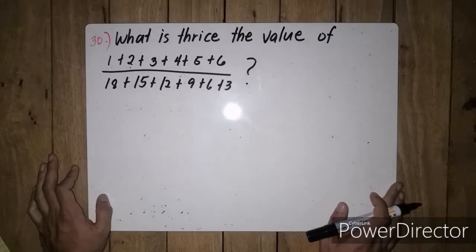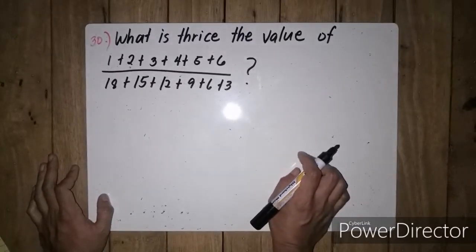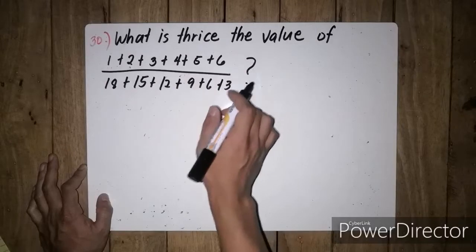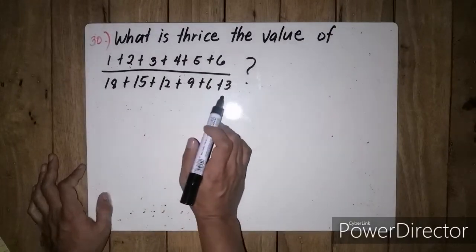Okay, so for question number 30, what is thrice the value of 1 plus 2 plus 3 plus 4 plus 5 plus 6 divided by 18 plus 15 plus 12 plus 9 plus 6 plus 3?